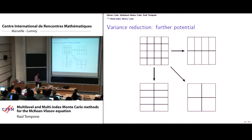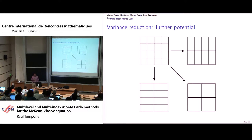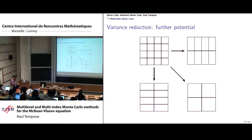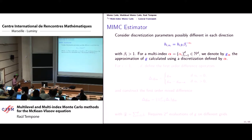These other two, where you de-refine essentially along only one direction, also satisfy the same constraint. They're cheaper to compute than this, and if this was close to this, you expect this to be close to this one as well. So the question is, now that you know you have more candidates to use as control variates, how to use them? That's the motivation for multi-index Monte Carlo.